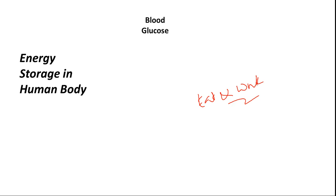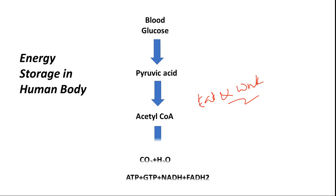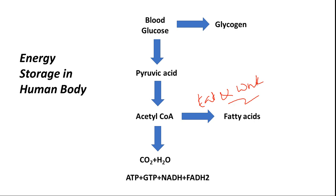We start from blood glucose. When we need energy, blood glucose will be converted to pyruvic acid. The pyruvic acid will be converted to acetyl-CoA, and then acetyl-CoA will enter into the Krebs cycle — that is how total energy from glucose is extracted. When our objective is not to extract energy but to store it, blood glucose can be directly converted to a polymer we call glycogen. Alternatively, acetyl-CoA can also be converted to fatty acids for energy storage.